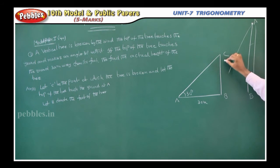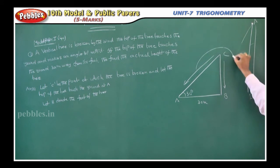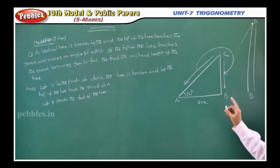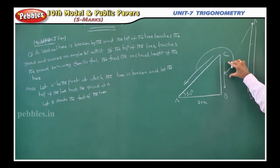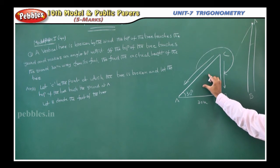Full height means this initial part and this bended part. I need BC and also AC. If you add these two parts, I will get total height of the tree. Two things I need to find out in this triangle: side BC and also this hypotenuse AC. That total height becomes BC plus AC.